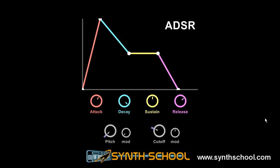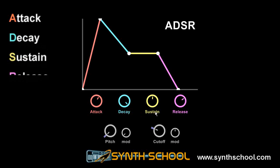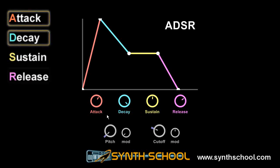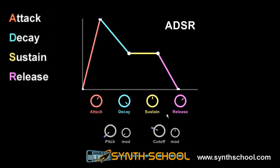The ADSR envelope gets its name after its four stages: attack, decay, sustain, and release. The attack, decay, and release are all time parameters, while the sustain is an amount or level parameter.